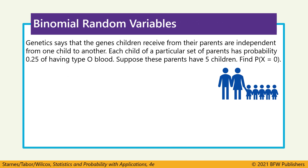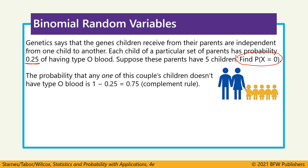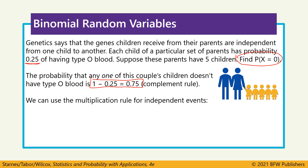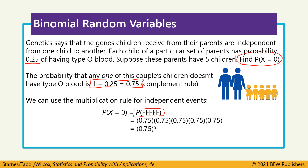Now that we know the blood type example is binomial, let's solve a few problems with it. These parents have five children, each with a 0.25 chance of having type O blood. We want to find P(X = 0) — none of the children have type O blood. Since there's a 0.25 chance of having type O blood, the complement is 0.75 — the chance they don't have it. With five children, we need five failures, so we calculate 0.75 to the fifth power, giving us approximately 23.73%.